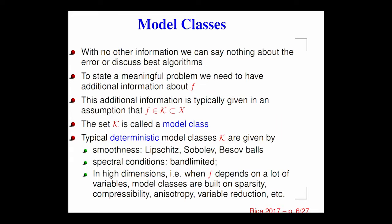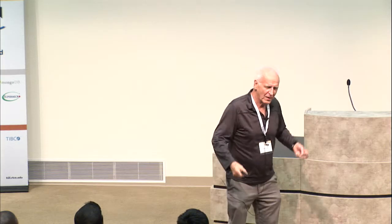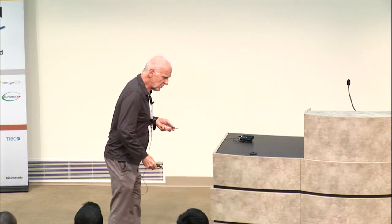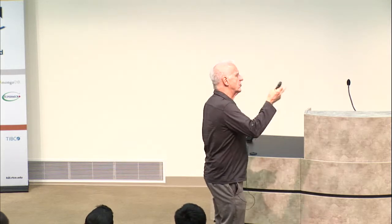If you think about this problem for 10 minutes, you'll say: I can't say anything about performance of an algorithm, because f could be anything. So you have to give me some more information about f. This is the hardest part for mathematicians when consulting with engineers — the engineer doesn't want to tell you what he knows about f. But this is, of course, the key in construction of algorithms. We need to know more about the target function we're trying to approximate.